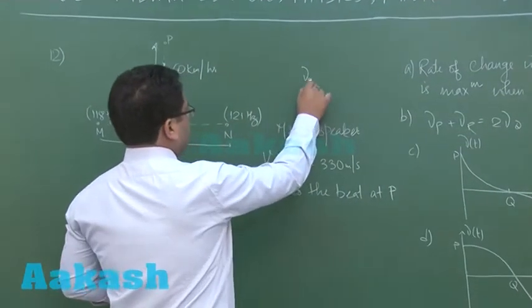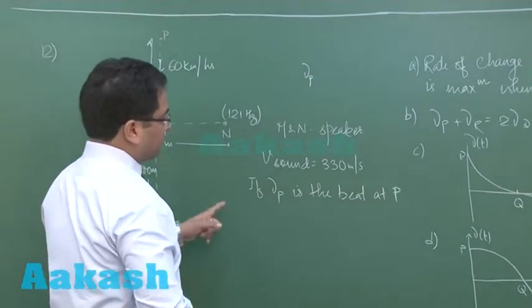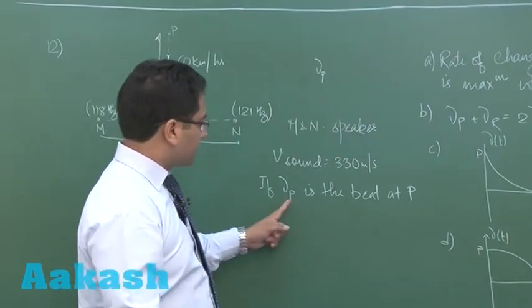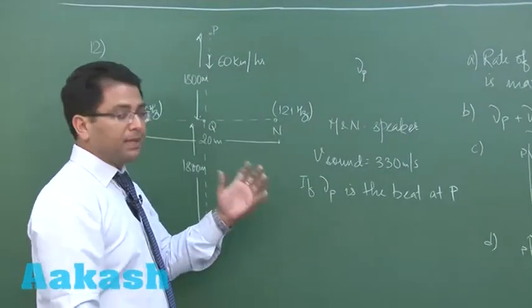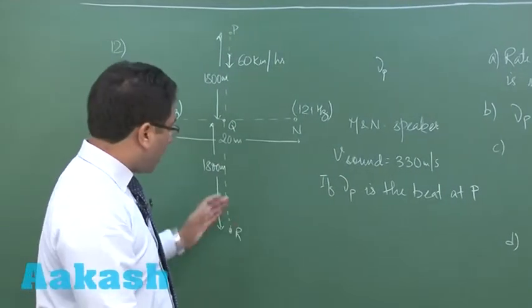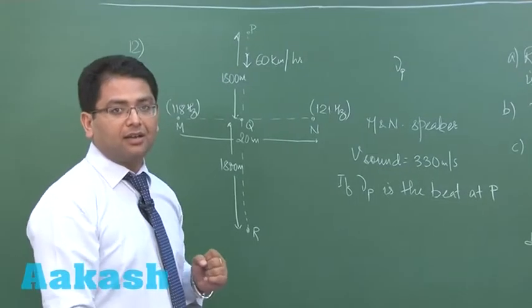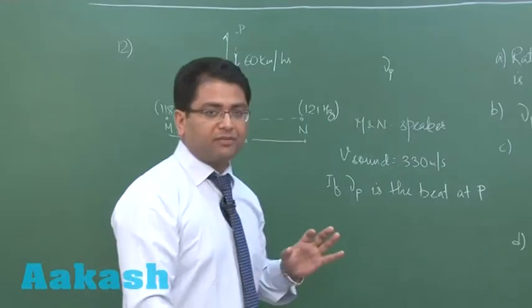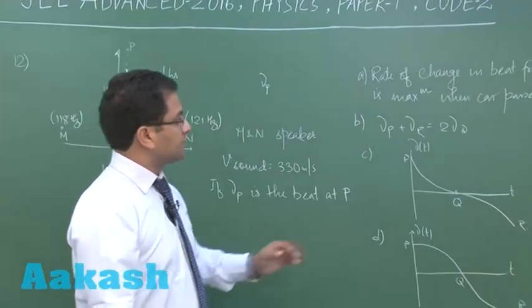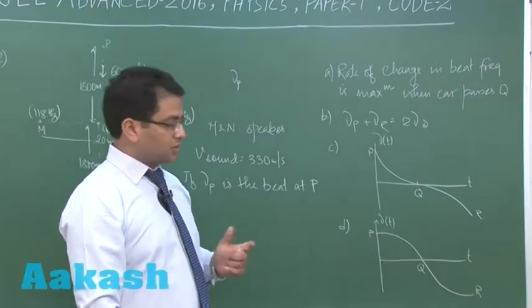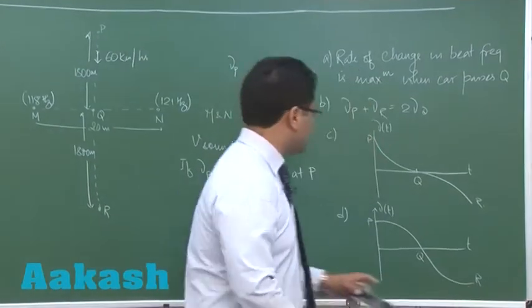And nu P is not the frequency, in fact that has to be understood, it has been termed as beat at P. So likewise nu Q would be beat at Q and nu R would be beat at R. So nu is not the apparent frequency, it is a beat. So based on that, even the speed of sound is given, we need to calculate all these things. So it is all calculation about the beats.